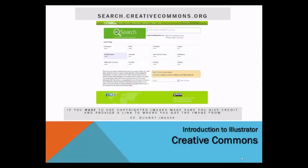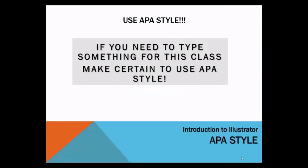Here is what the site looks like. Enter a search term, uncheck Use for Commercial Purposes, and then click on either Google Images or Flickr to search. Any written assignment for this course must be in APA style. Familiarize yourself with APA style, or if unfamiliar, seek help from the Writing Center.